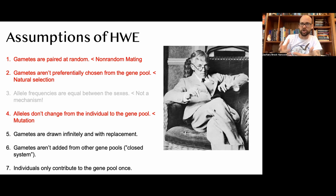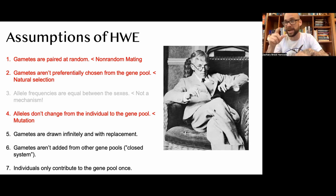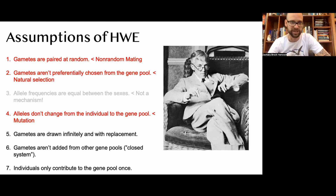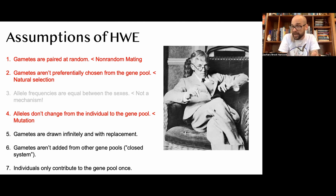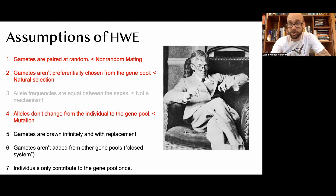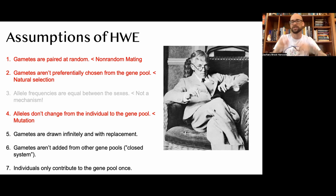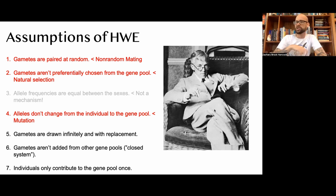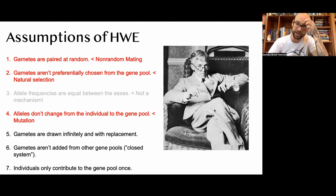The second assumption is that gametes aren't preferentially chosen from the gene pool. When they are preferentially chosen, that's natural selection — selection is peeking into the beanbag and picking the best ones. We derived the mathematics behind one-locus models for natural selection. The third assumption — that allele frequencies are equal between the sexes — isn't really a mechanism of evolution, since a single generation of random mating puts you back into Hardy-Weinberg. The fourth was mutation: that alleles don't change from the individual to the gene pool.